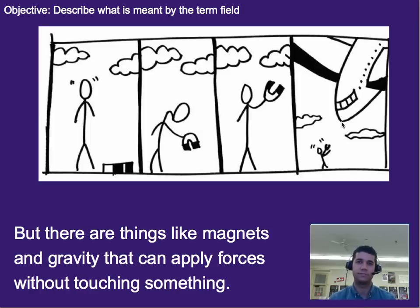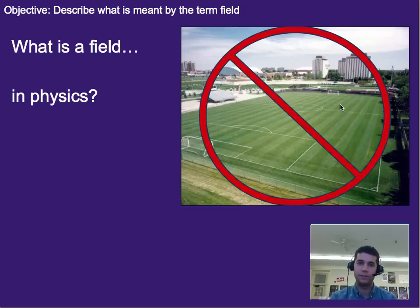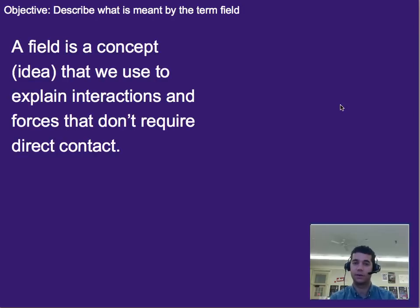And so in order to help quantify and understand it, we came up with this idea of a field, and the field was the kind of go-between. In other words, a magnet creates this field, and that field is what is pulling on the plane. And that's why it receives a force at a distance. Now when I say the word field in physics, I don't mean this big open field. What I mean is kind of this aura, or this idea, this concept that we use to explain these interactions and forces that don't require direct contact.